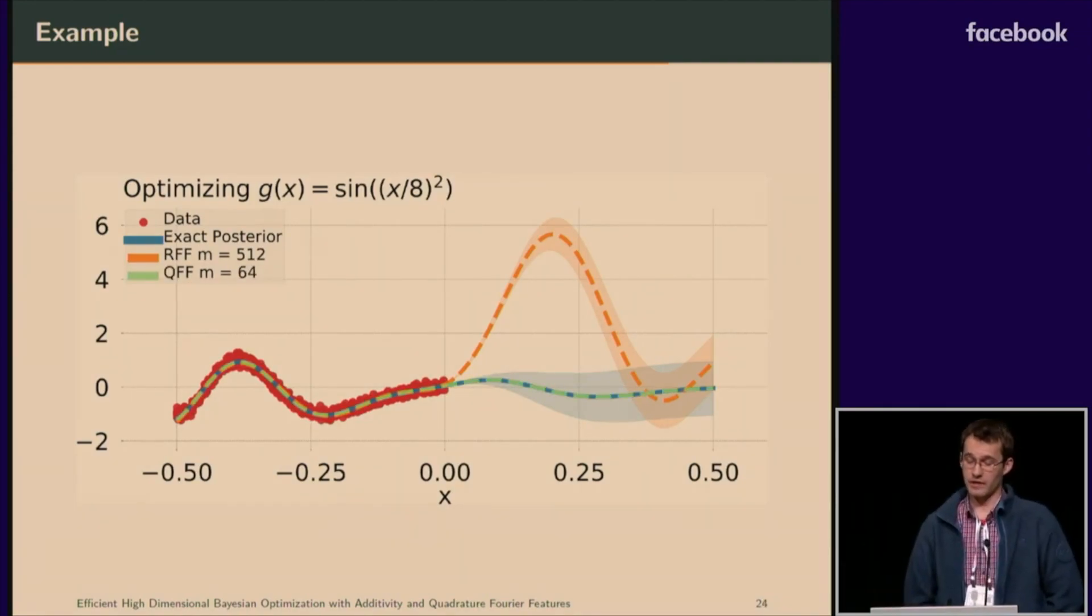With a smaller basis size, smaller finite sum approximation, we are able to completely recover the posterior mean and the confidence estimates using our approximation.